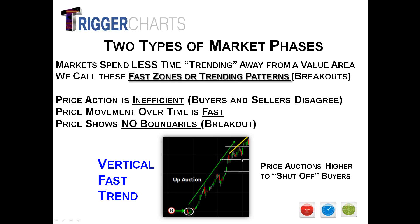Price is inefficient, there's disagreement, heightened emotions, confusion: 'If I buy now, this is a top, it's going to reverse.' So you stay out, and of course the market goes even higher, making you even more frustrated as a trader. Price movement is fast, quick, rapid, impulsive, violent, volatile. Price shows no boundaries — it's a breakout. The words to classify this: vertical, fast, trend. Going back to the initial concept: price will, in fact price must, auction higher, must move higher, as long as there are buyers wishing to purchase shares.